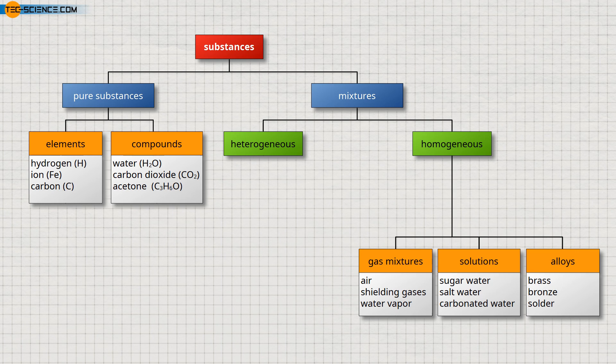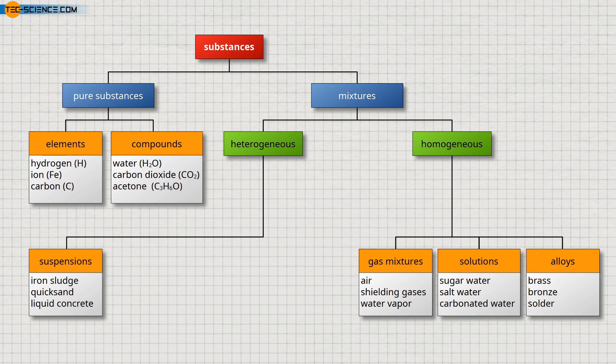Mixtures of substances with an uneven distribution of the contained types of particles are referred to as heterogeneous mixtures. A mixture of a solid and a liquid is then referred to as a suspension. This includes, for example, iron sludge, quicksand or liquid concrete.